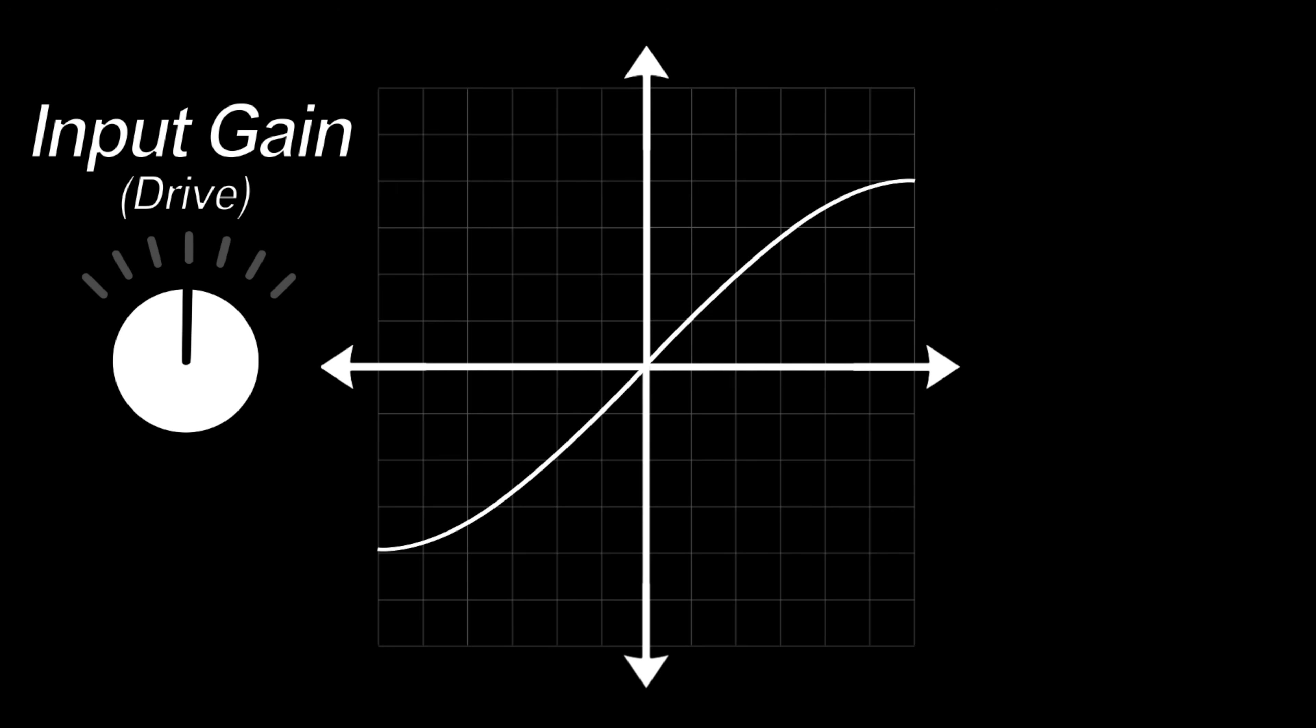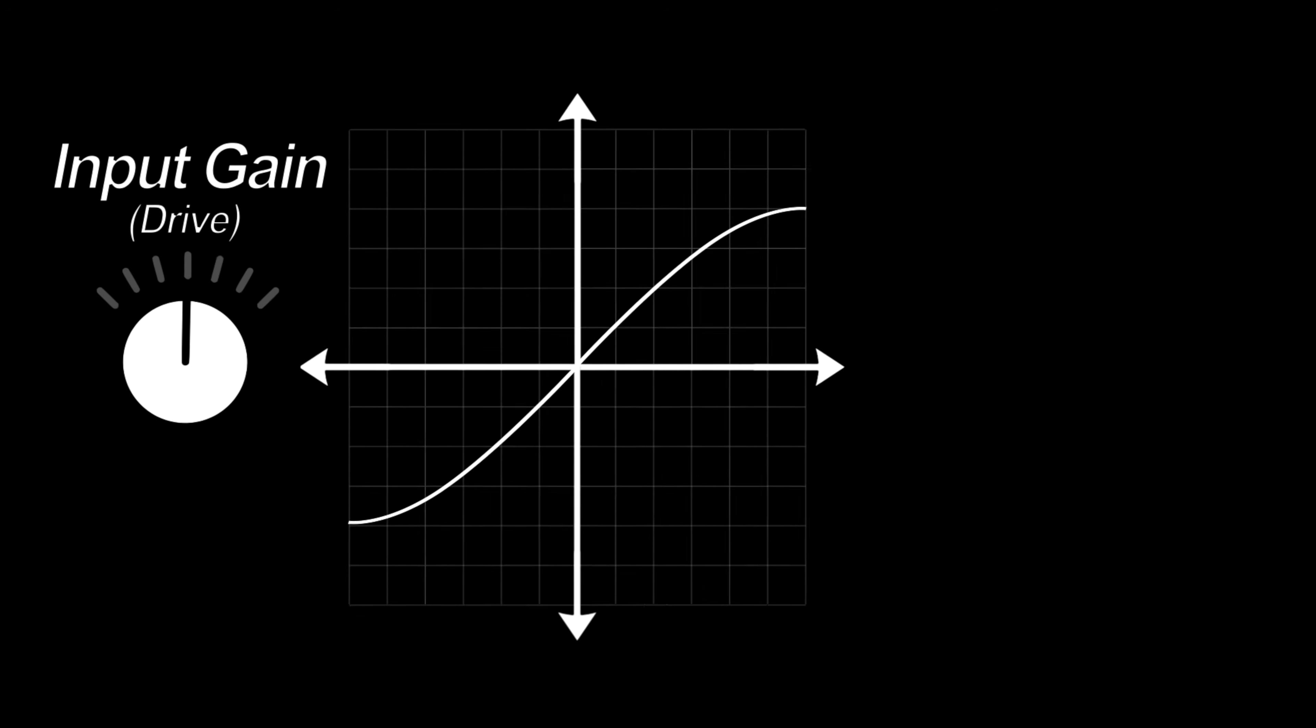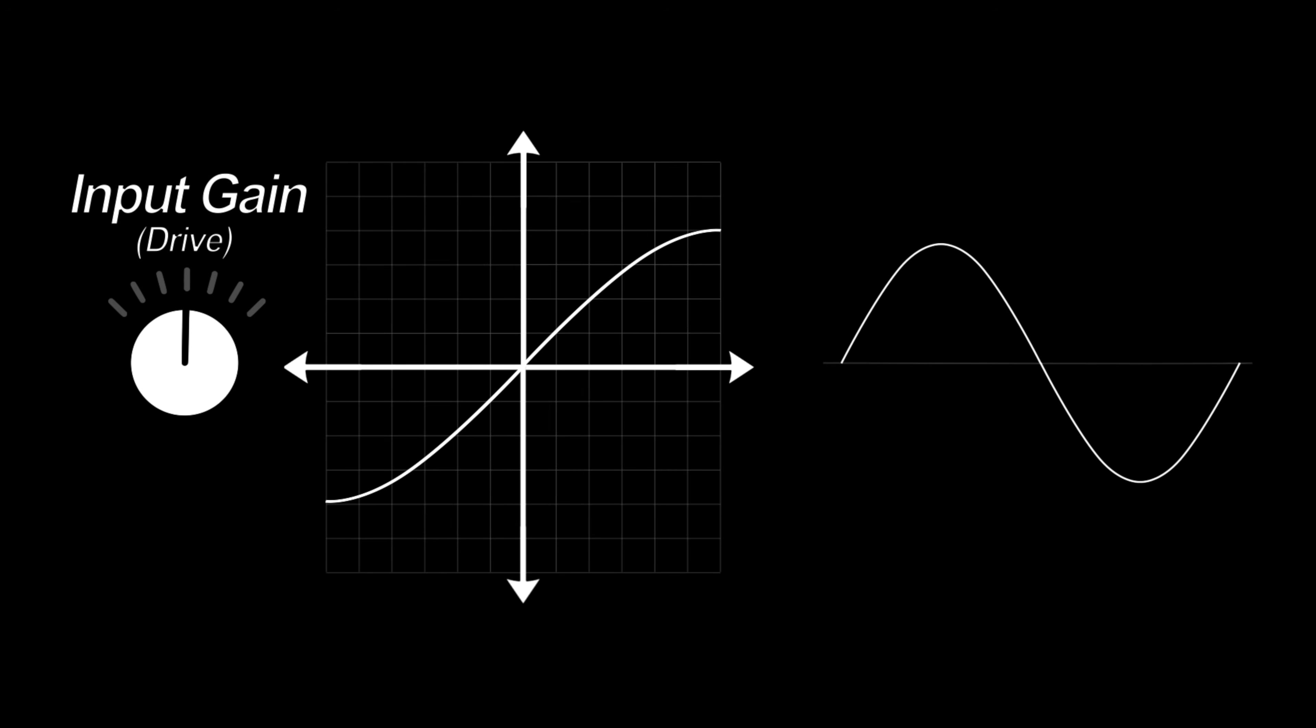But there's more than just symmetry to consider. We also have to think about the level of the sound we're sending into the saturator. This is controlled by the input gain or the drive. Now why is drive important? As we saw earlier, sigmoid curves are roughly linear for low amplitudes and distort more for high amplitudes. And this means the amount of distortion is set by the level of the wave we're sending in.